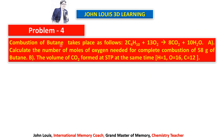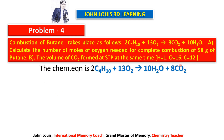Problem number 4: combustion of butane C₄H₁₀. The balanced equation is given: 2C₄H₁₀ + 13O₂ → 8CO₂ + 10H₂O. The first question: calculate the number of moles of oxygen needed for complete combustion of 58 grams of butane. The molecular weight of butane C₄H₁₀ = 58. In the balanced equation, 2 moles of butane requires 13 moles of oxygen.